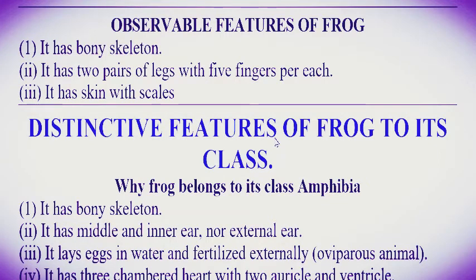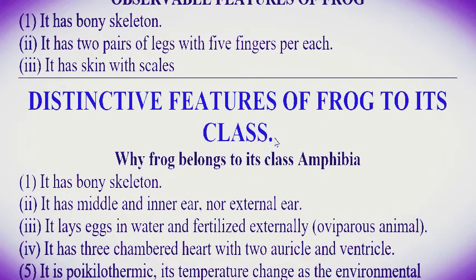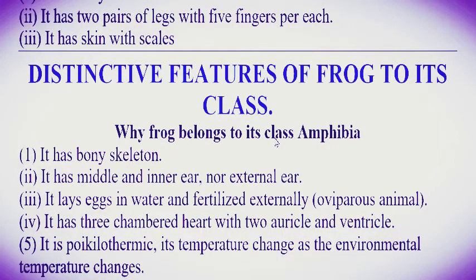Distinctive features of the frog — reasons why it belongs to Class Amphibia. Number one: it has a bony skeleton. Number two: it has a middle and inner ear, meaning no external ear or pinna. Number three: it lays eggs in water and performs external fertilization. Organisms which perform external fertilization are called oviparous animals. Number four: it has a three-chambered heart with two auricles and one ventricle.